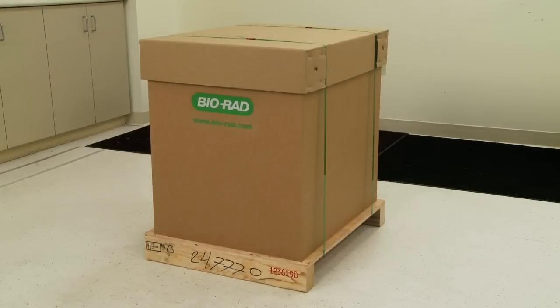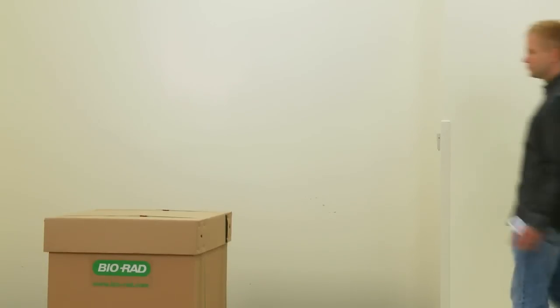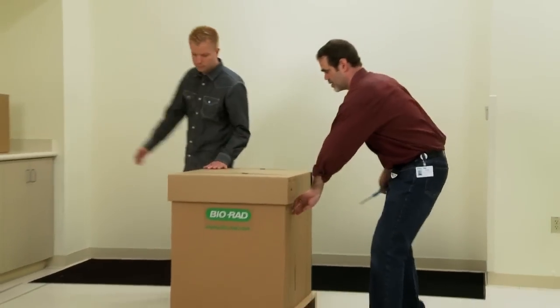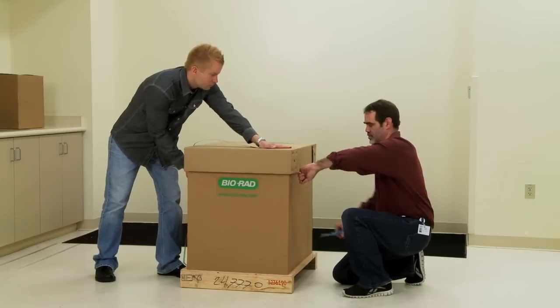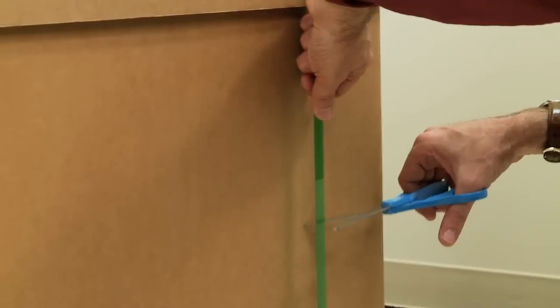Your NGC system arrives in a 31 by 28 by 45.5 inch box. Use the help of another person and a pallet dolly to move it to your lab space. You will want to remove the outer box straps first.